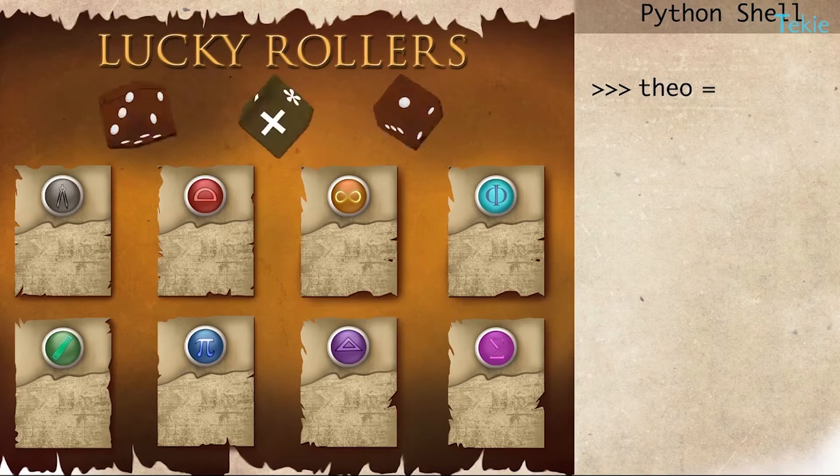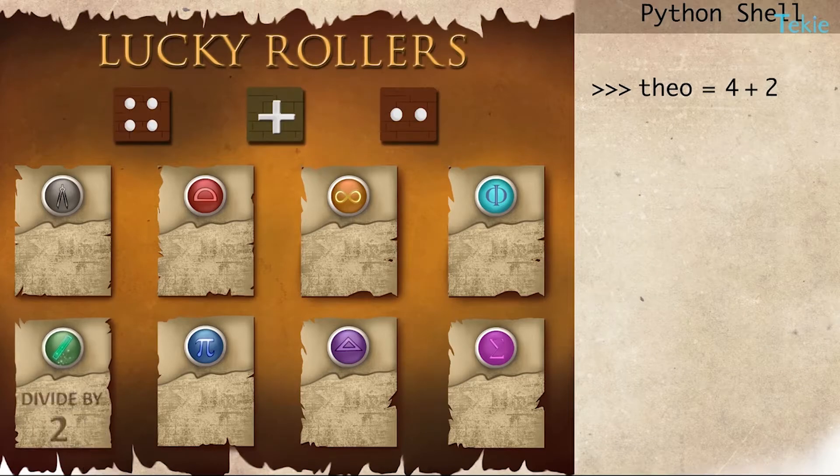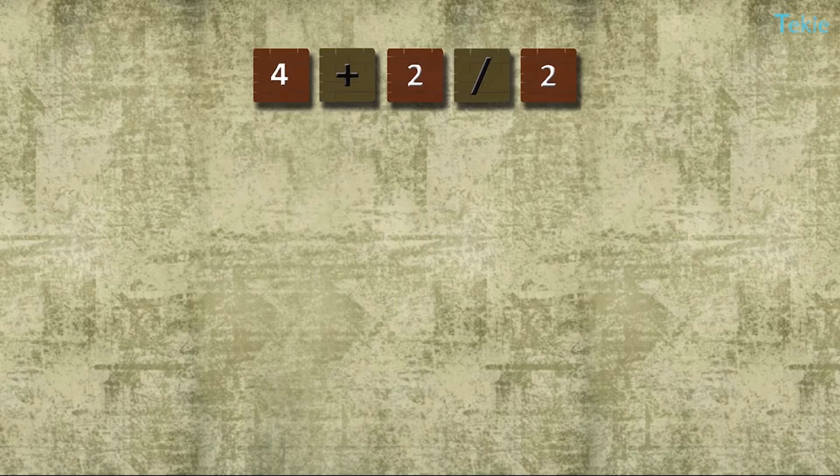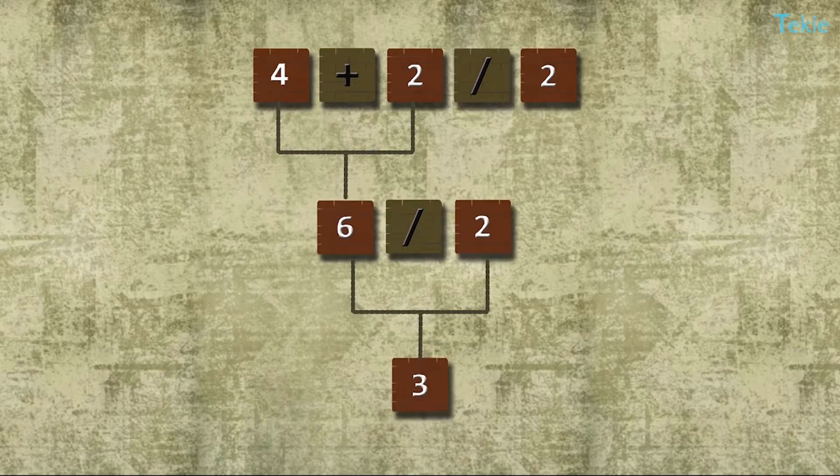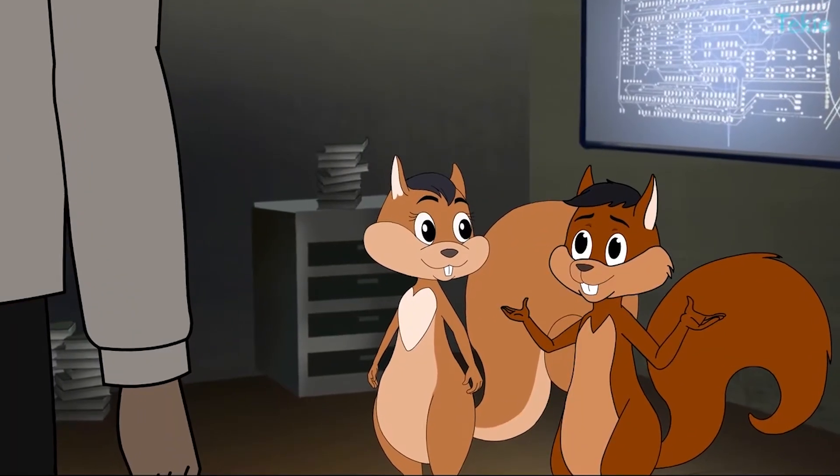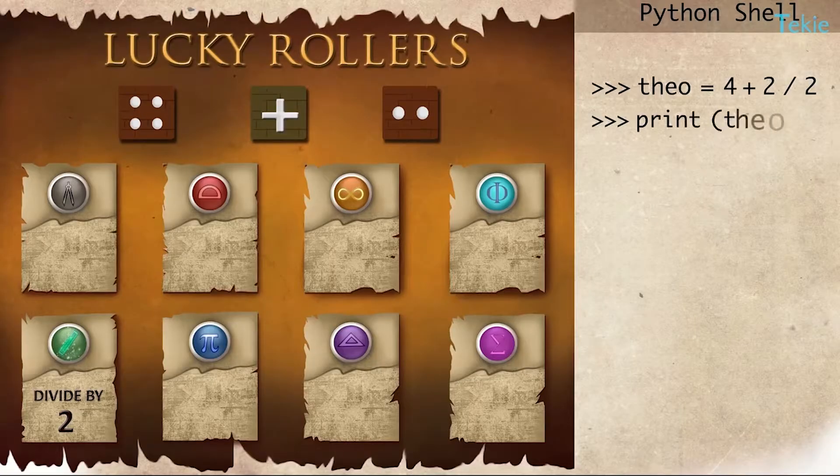Roll it. Four plus two, okay, so four plus two divided by two will be three. All right, let's check what Mr. Python has to say about it.